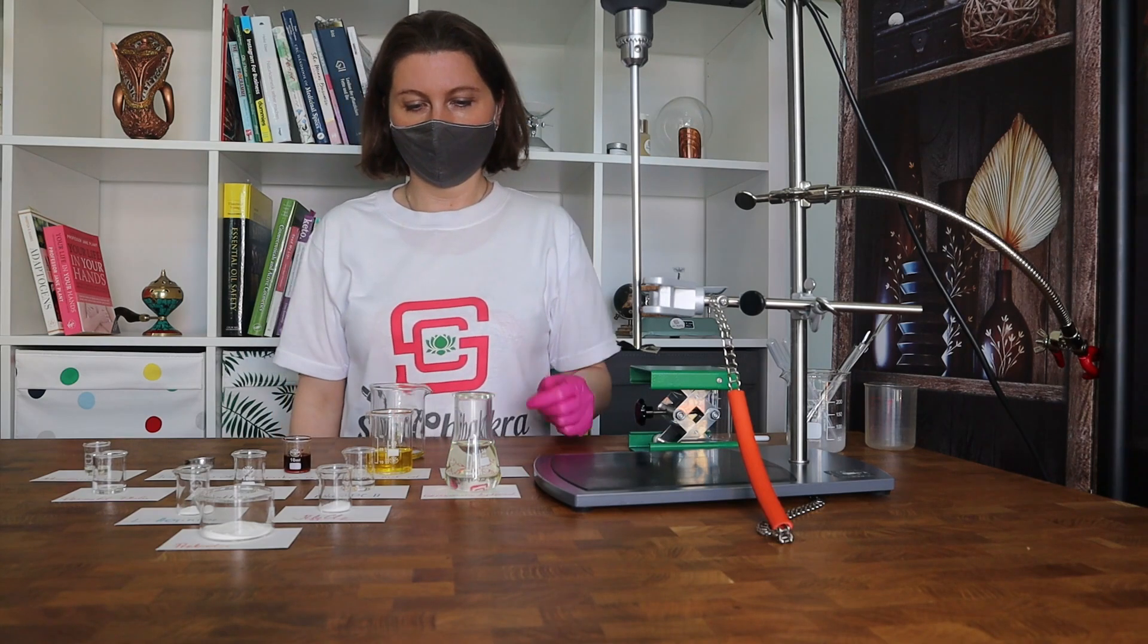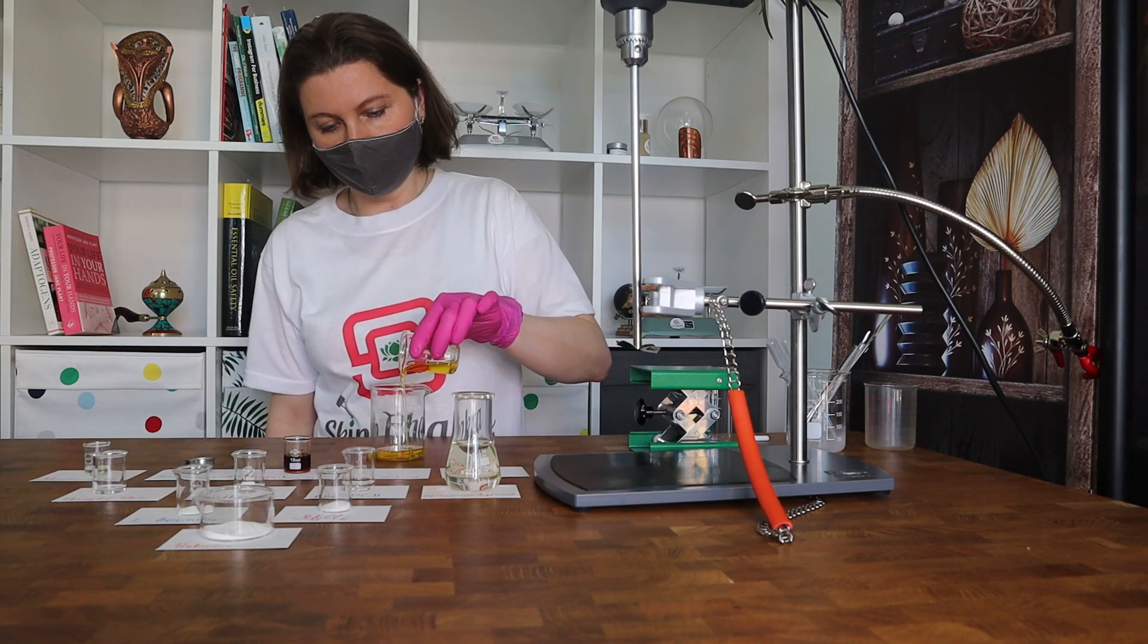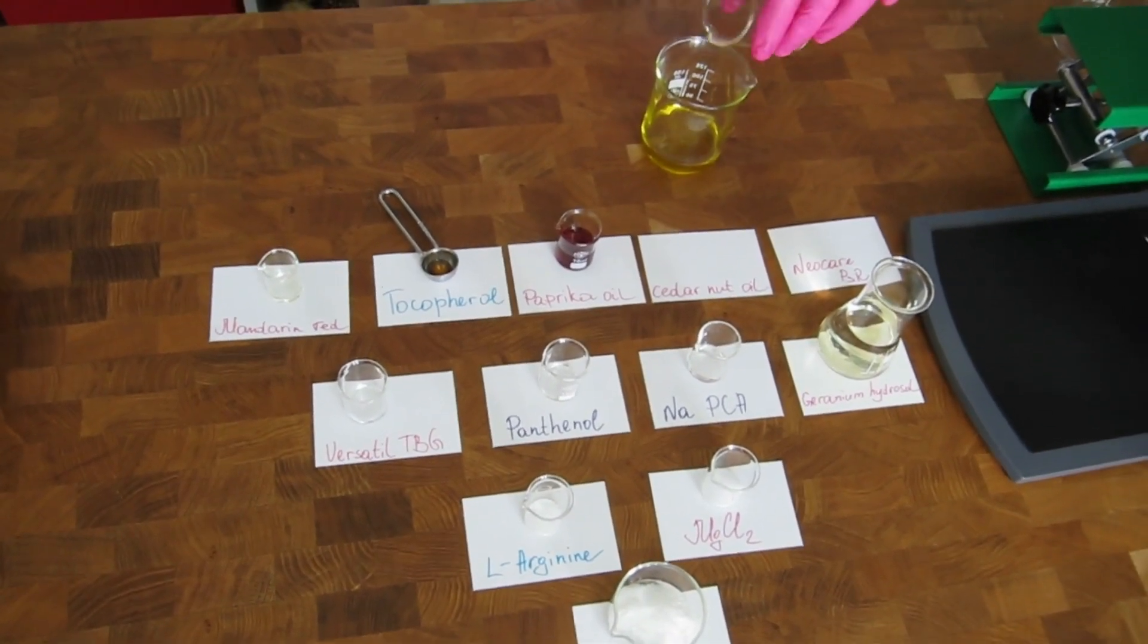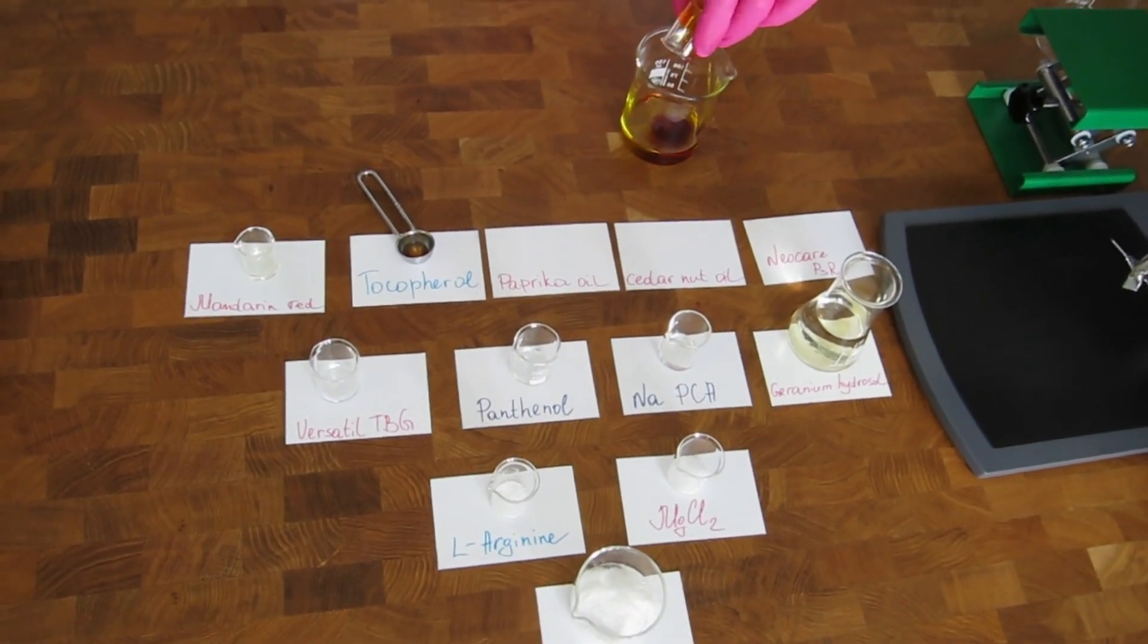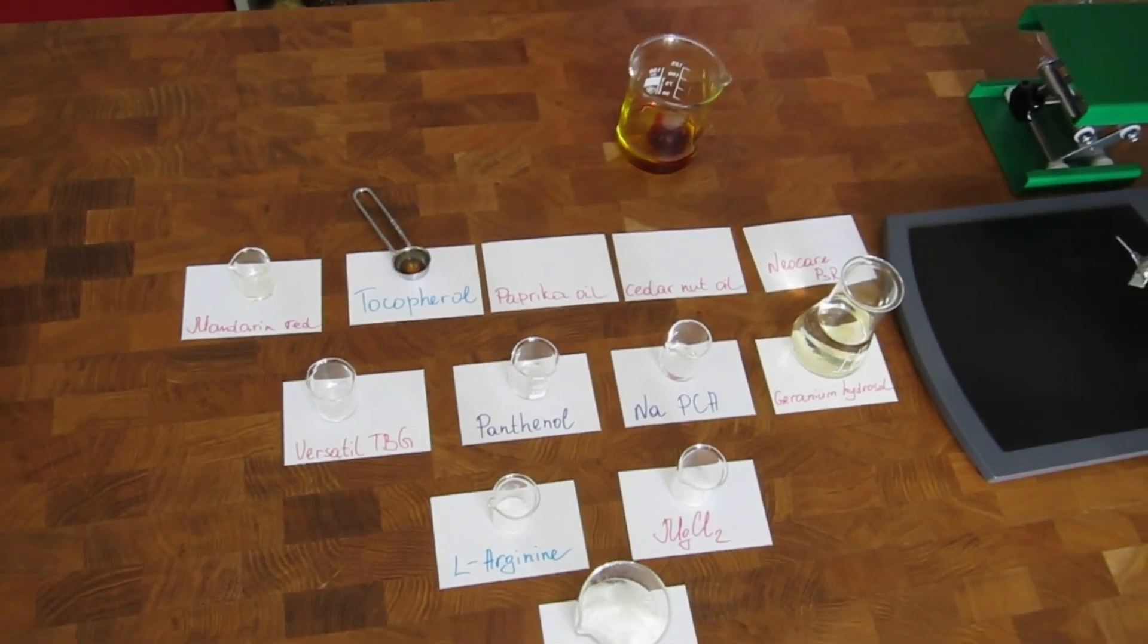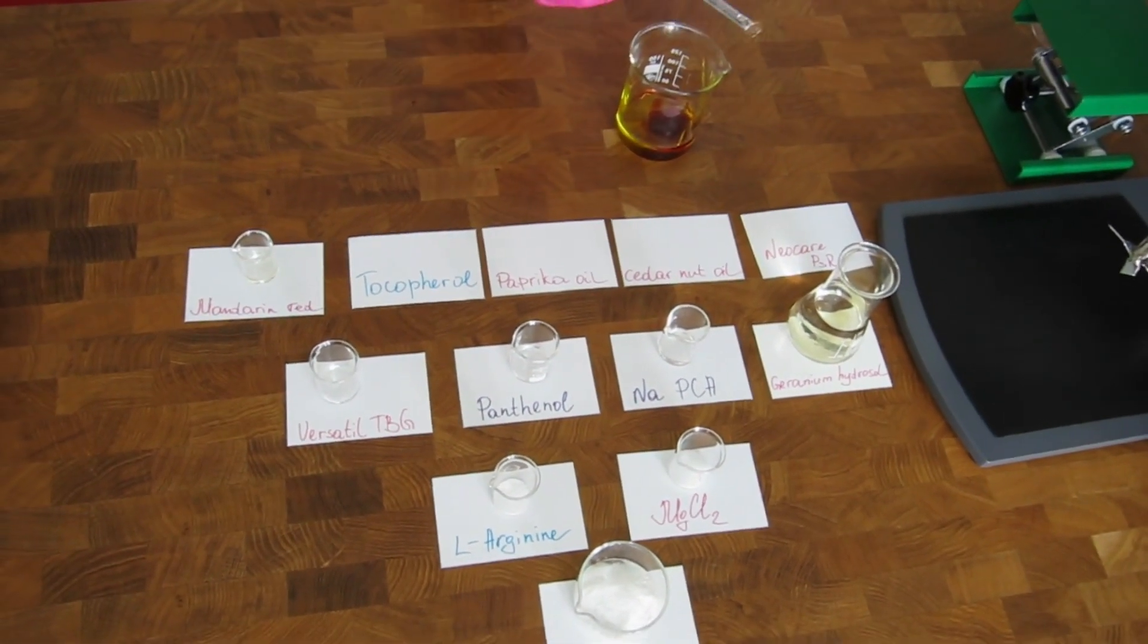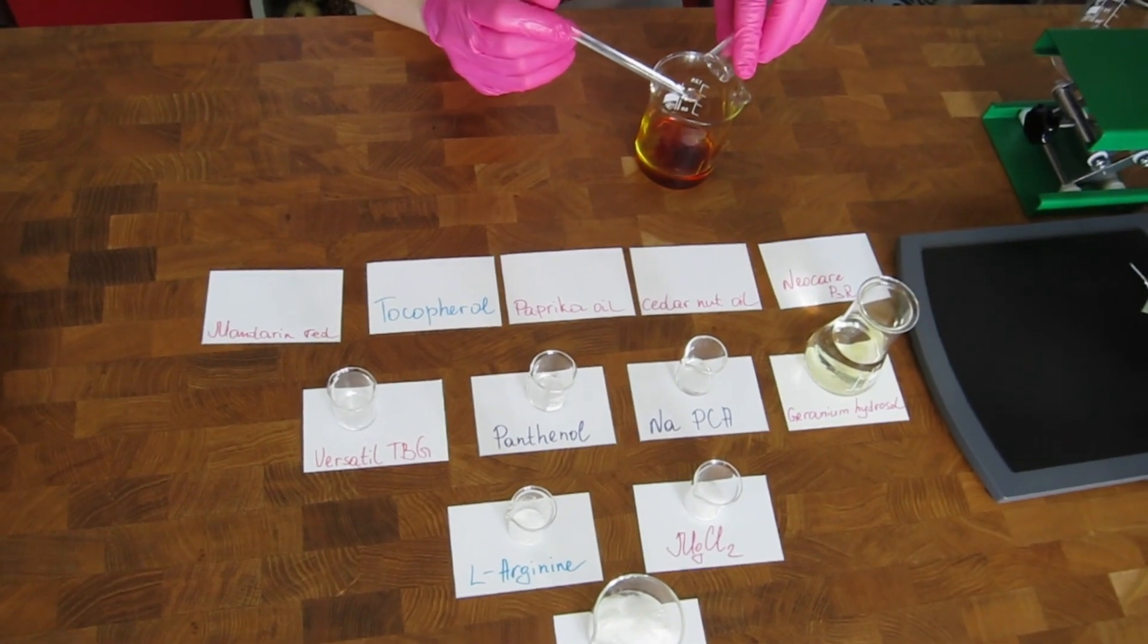This is a cold process emulsifier, which means that we blend the oil and water phases separately and then very slowly and gradually add the water phase into the oil phase. The oil phase consists of the emulsifier, obviously, which is Neo-K-P3R, cedar nut oil, and paprika oil. Both of them have a high iodine value and we do not use them in a hot process, but since this is a cold process we can easily use both of them. We add tocopherol, natural vitamin E as the antioxidant, and mandarin essential oil that goes to the oil phase from the beginning since we are not going to heat the oil phase.